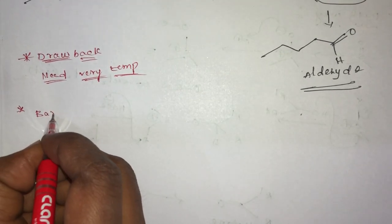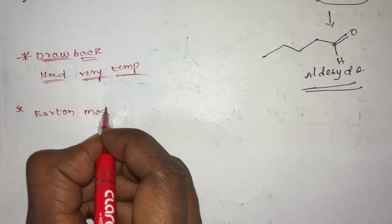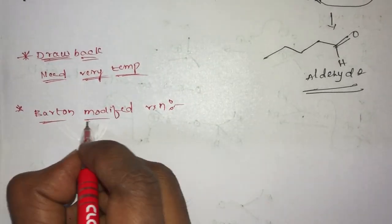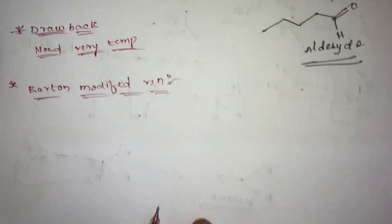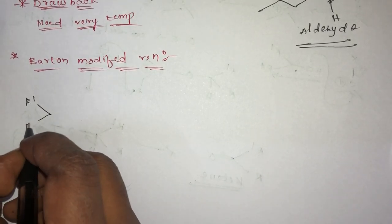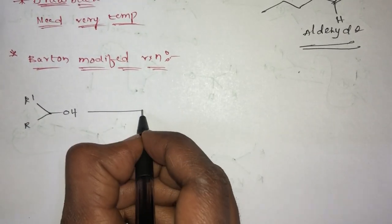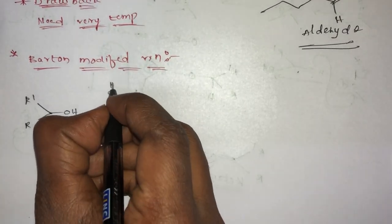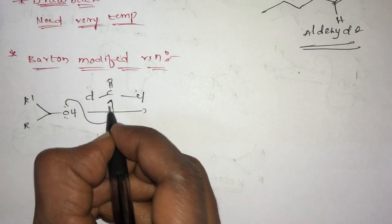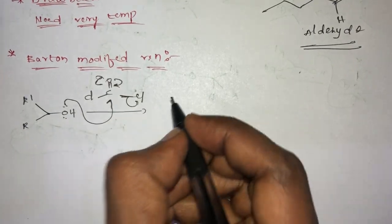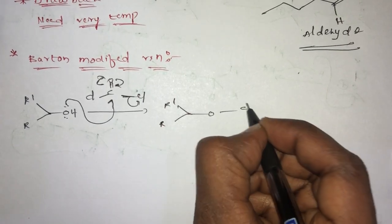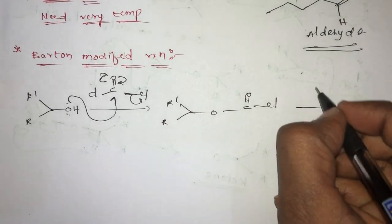That new reaction is the Barton modification. Barton modified this reaction. He took secondary alcohols and treated them with COCl₂ (phosgene). The lone pair of electrons migrates, the bond migrates, and chlorine leaves. So you get R-O-C(=O)Cl as intermediate, which is then treated with DMSO.